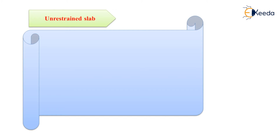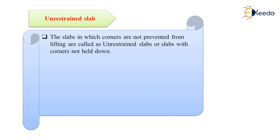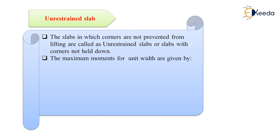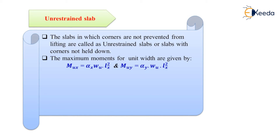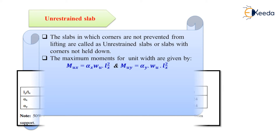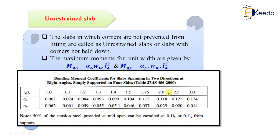The next type is unrestrained slab. Slabs in which corners are not prevented from lifting are called unrestrained slabs, or slabs with corners not held down. When a simply supported slab does not have adequate provision to resist torsion at the corner and to prevent the corner from lifting, the maximum moment is calculated by the same formula: MUX = alpha X × W × LX², and MUY = alpha Y × W × LX². The difference is that the bending coefficients are obtained from Table 27 of IS456.